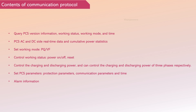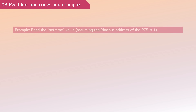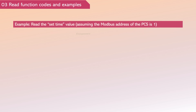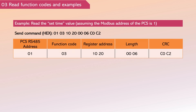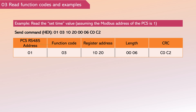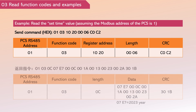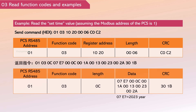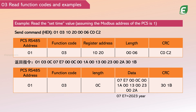The EMS can also retrieve all register information. The PCS communication protocol supports standard function code 03 read commands. For example, to read the set time from the PCS with Modbus address 1, you would read 6 bytes starting from register address 0x1020.